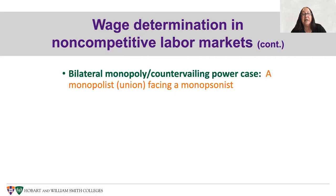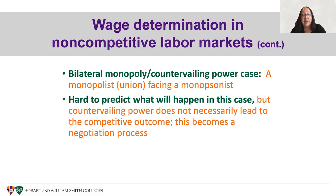You might wonder what happens if you have bilateral monopoly or countervailing power — a union facing a monopsonist. Does that give us a competitive outcome? The answer is not necessarily, because now you're really more in a world of negotiation, and in a world of negotiation it's hard to predict what will happen. Countervailing power does not necessarily lead to the competitive outcome. The price is going to be in the range between what the monopolist would like and what the monopsonist would like, but it doesn't necessarily end up at either extreme or at the competitive one.